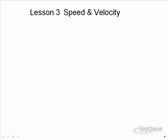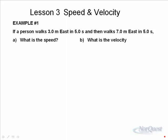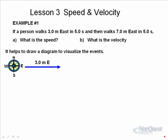The best way to understand the difference between speed and velocity is to look at examples. Example number one: a person walks three meters east and then walks seven meters east. The first part of his motion takes five seconds; the second part takes five seconds. It always helps in physics to draw a diagram. The compass on the diagram tells us that north is to the top of the page, south to the bottom, east to the right, and west to the left.